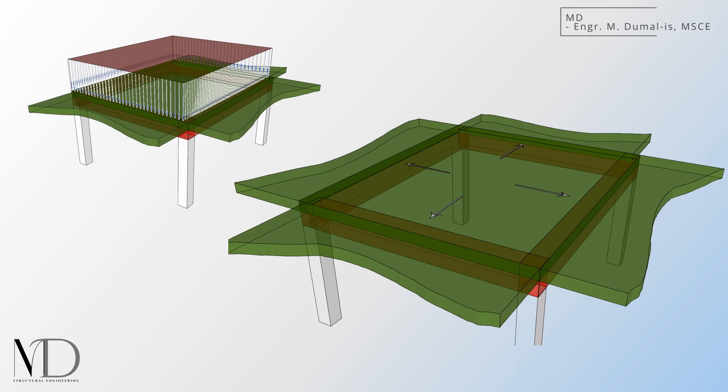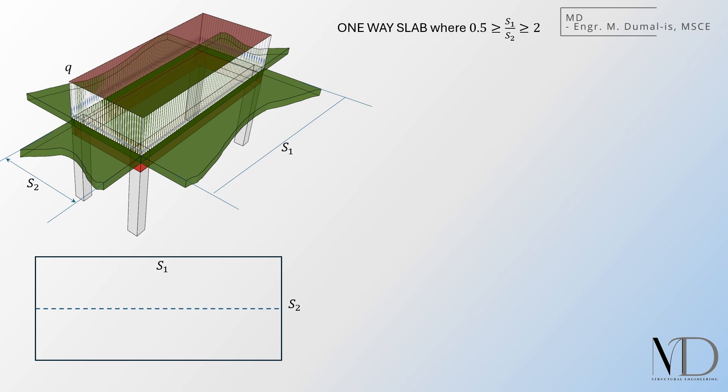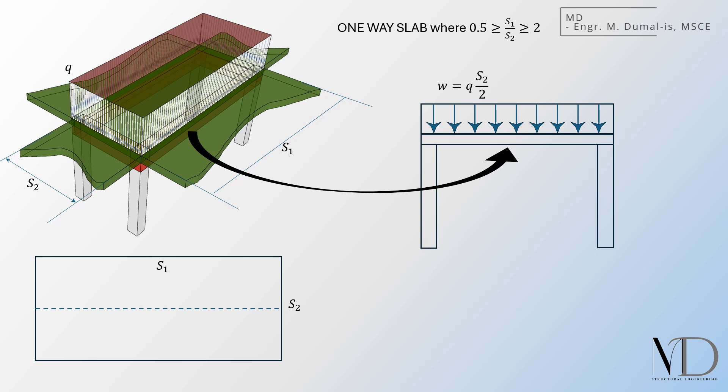There are various ways to distribute the slab load to the beams, depending on structural assumptions and modeling techniques. However, the simplest and most widely used approaches are the one-way and two-way load distribution methods. These methods help us determine which beams carry the load and how much of it they take. If a slab primarily spans in one direction, things are simple. The load distributes evenly to the supporting beams, and the resulting beam loads are neatly rectangular. This is straightforward to analyze and design because each beam carries a uniform load per unit length.